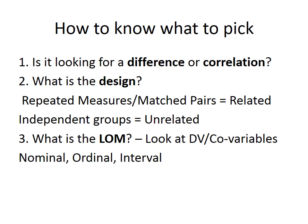The first question is: what is the research looking for — is it a difference or a correlation? Correlation-type questions tend to use the word 'relationship,' while difference questions might refer to performance before and after. The second question is one of research design: repeated measures, matched pairs, or independent groups. Repeated measures or matched pairs is a related design; independent groups is unrelated. The final question — which is a real problem area for many students — is what is the level of measurement? In an experimental method, focus on the DV; in a correlation study, look at the covariables.